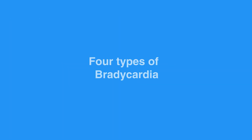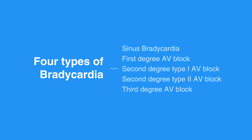We will review four types of bradycardia in this lesson, including sinus bradycardia, first degree AV block, second degree type I AV block — which is also known as Wenckebach — second degree type II AV block — which is also known as Mobitz II — and third degree AV block, which is also known as complete heart block.